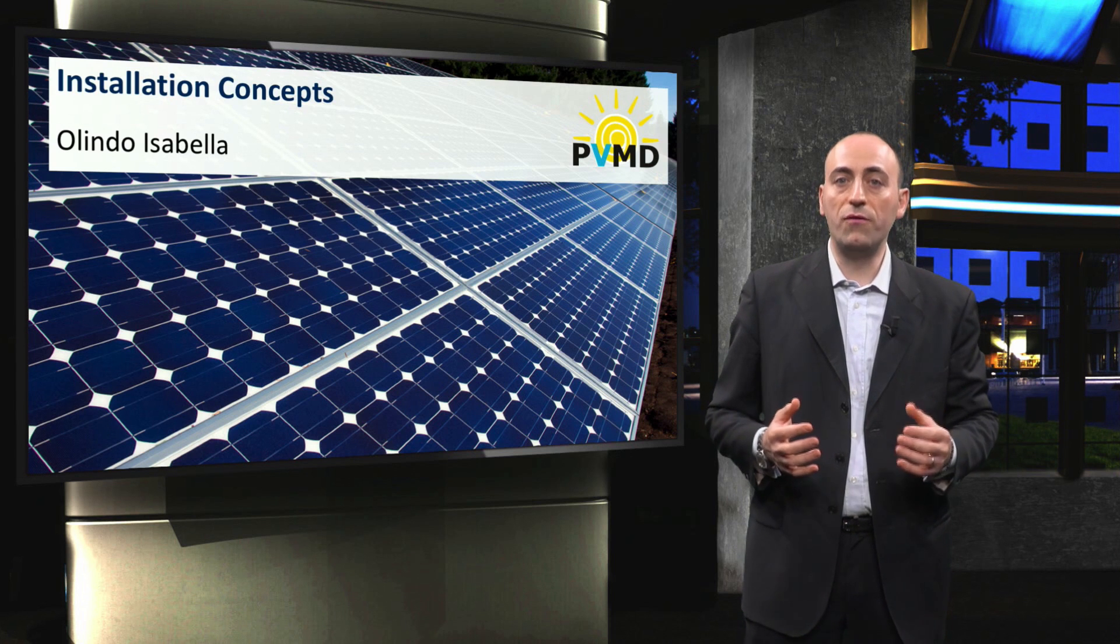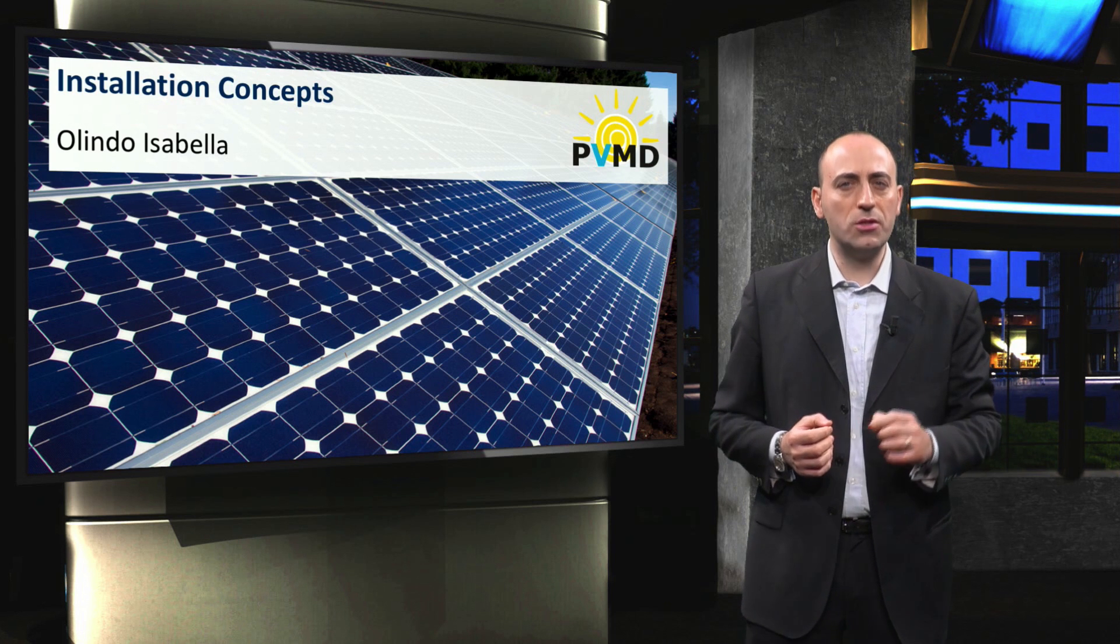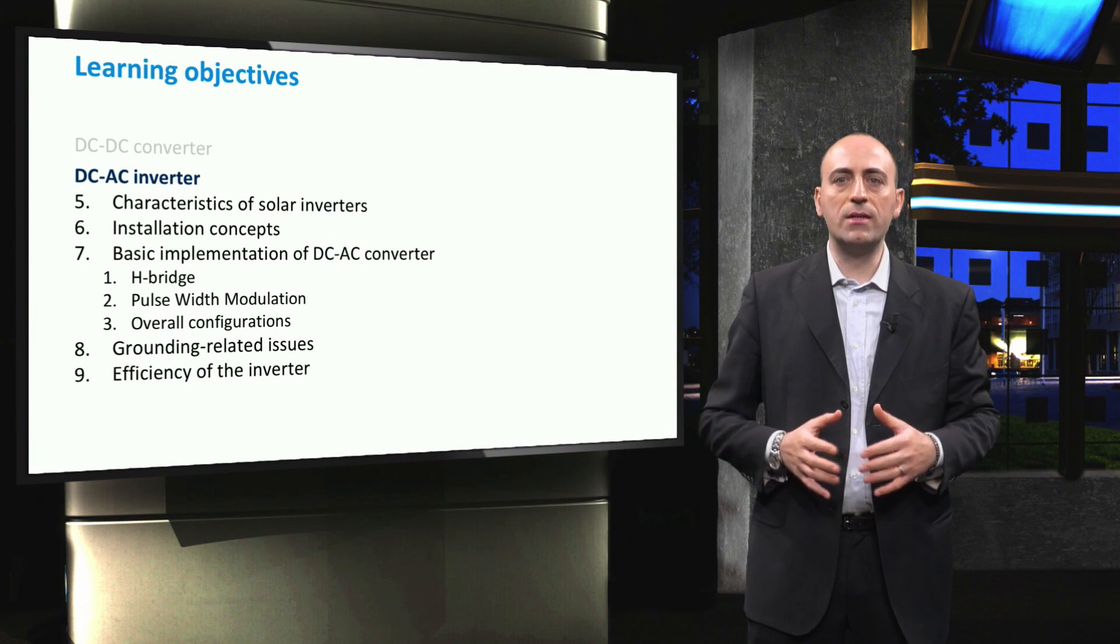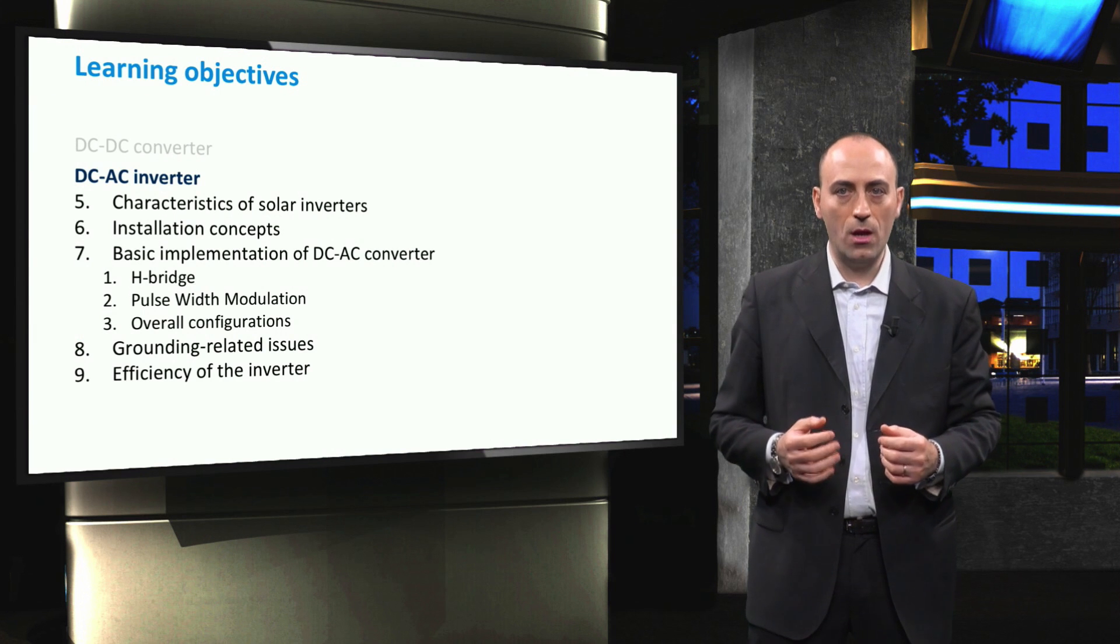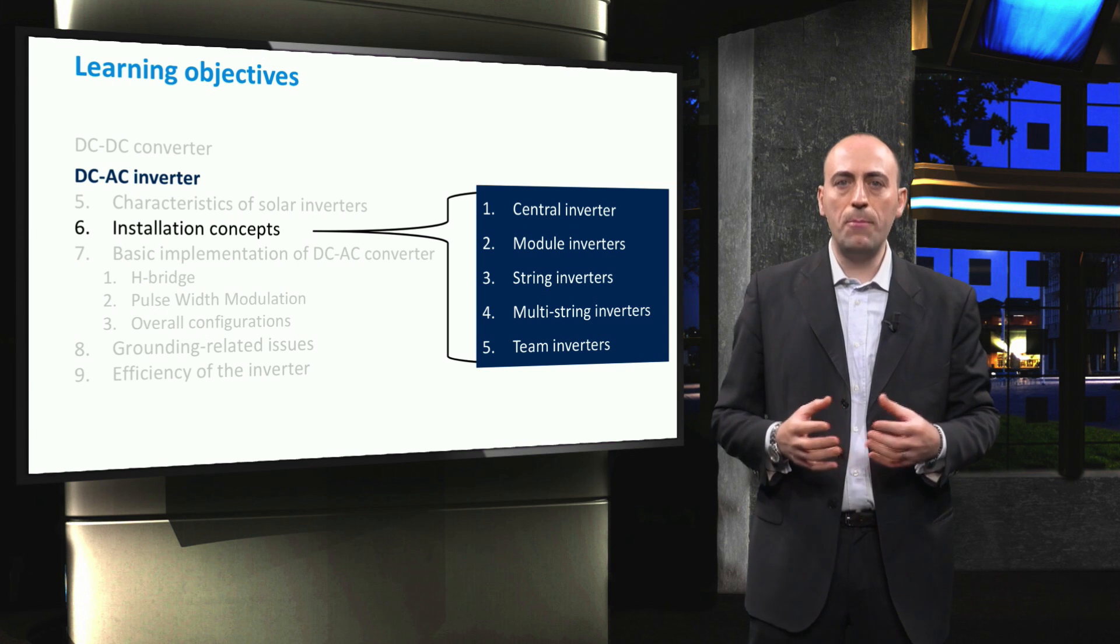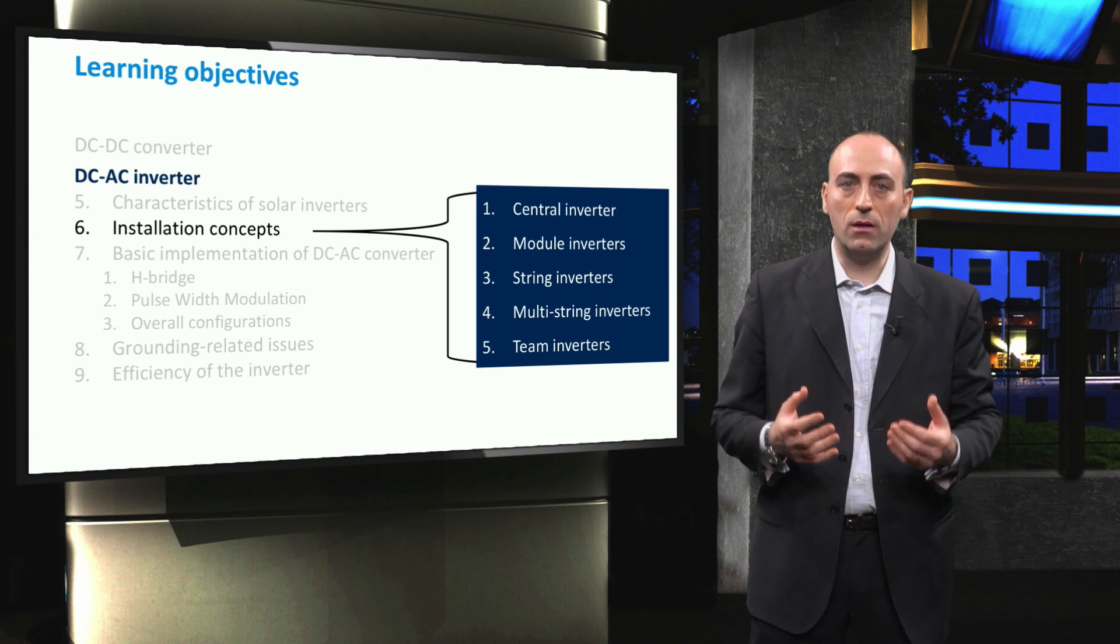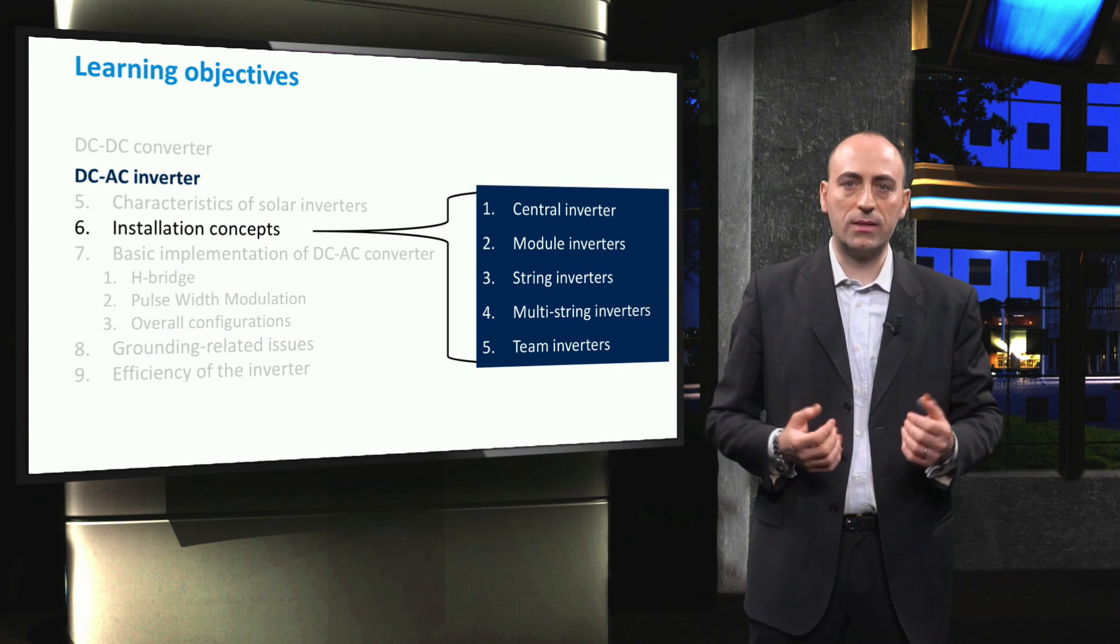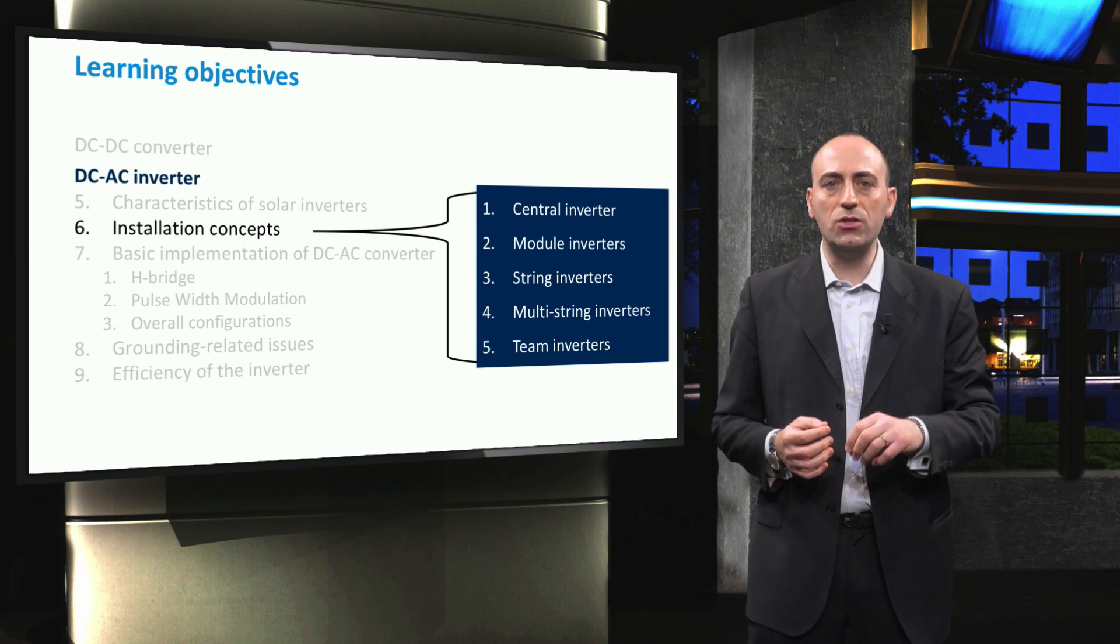Before going into details about different converter topologies used for power conversion in PV systems, I will present a general overview of different system architectures. The architecture determines how PV modules are interconnected and how the interface with the grid is established. Which of these system architectures will be employed in a particular PV plant depends on many factors, such as the environment of the plant, whether it's situated in an urban environment or in an open area. In this video we will discuss different architectures, focusing on the main advantages and disadvantages.